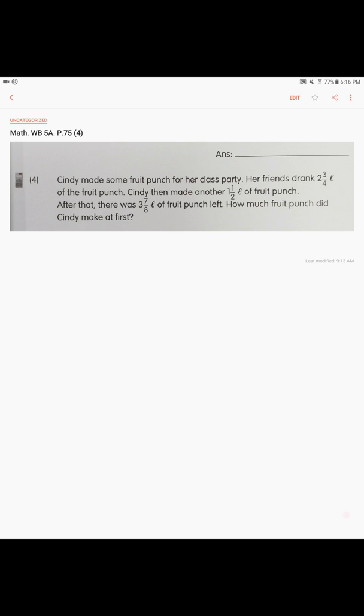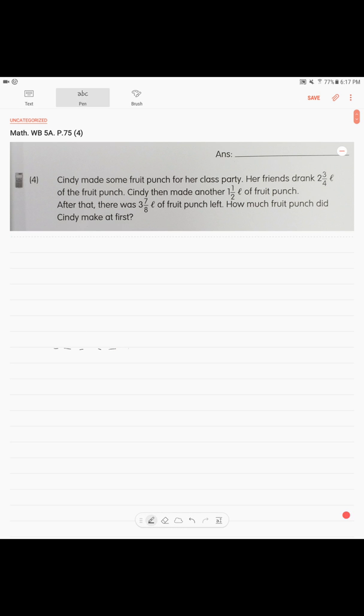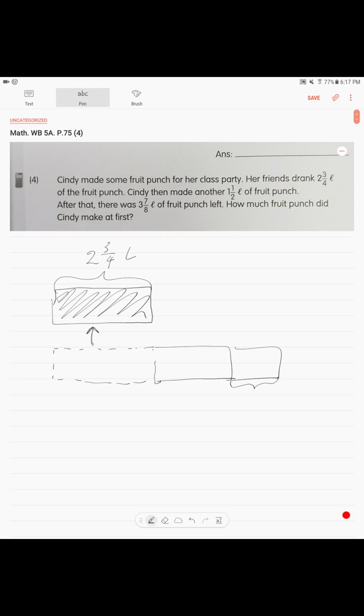Okay, so in order to solve this problem, we need to make our total punch. If we make a total, this is the amount that Cindy's friends drank and finished. This is the amount that's left, and this is the amount she prepared again. The amount that her friends drank, we draw it again as a separate block. We show with this arrow that it was removed, and it was two and three over four liters. This was removed. This was the amount that she prepared again, fresh punch: one and one over two liters. We have this that was left from before, but we know that the total left was three and seven over eight liters.